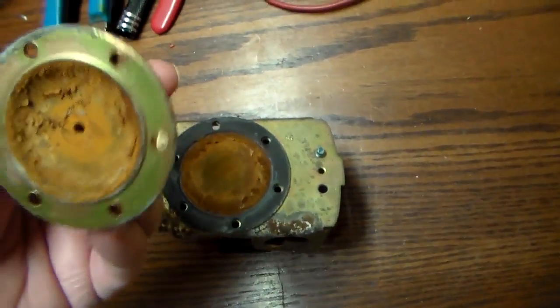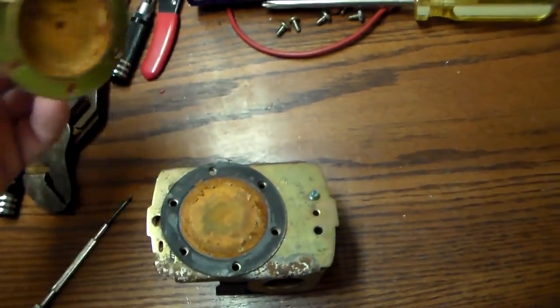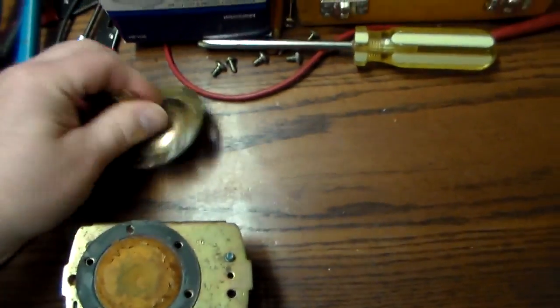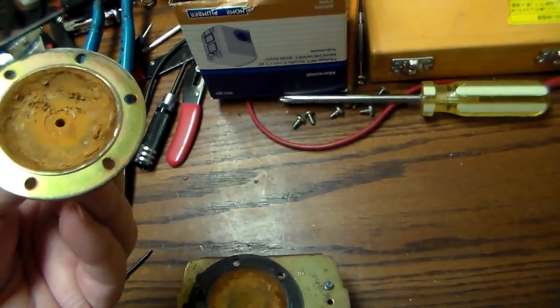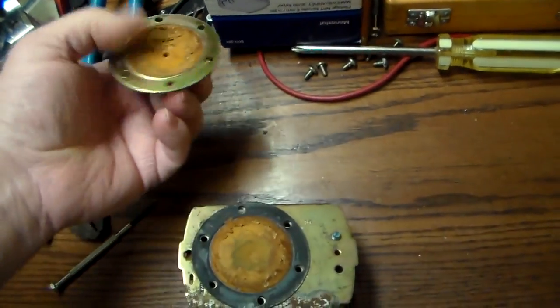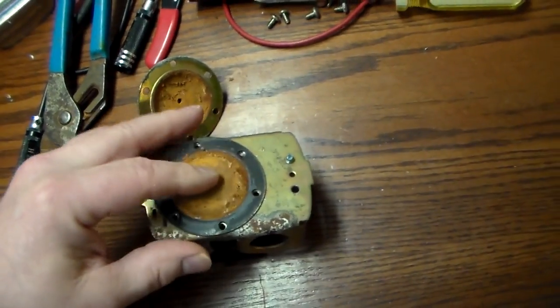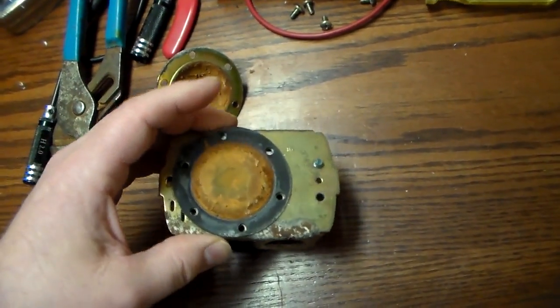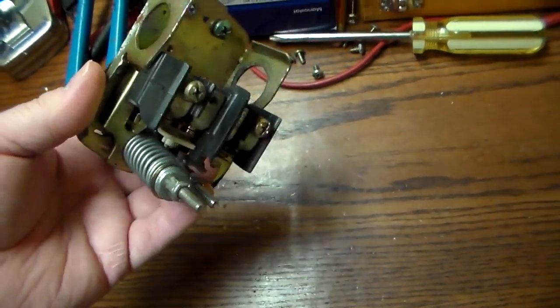You take the diaphragm out, you take this out and you clean it up in the sink with some dishwashing liquid and maybe even a bit of emery cloth or something like that to scrape the rust off. Then you put it back in and it'll probably work for a few more years.